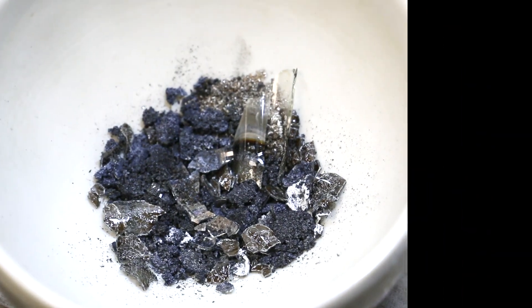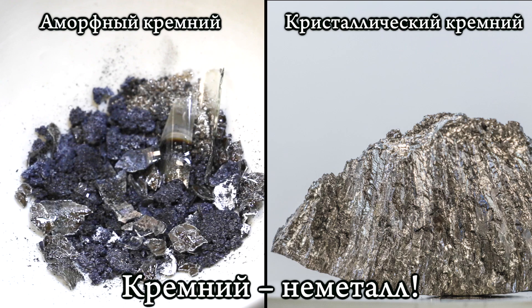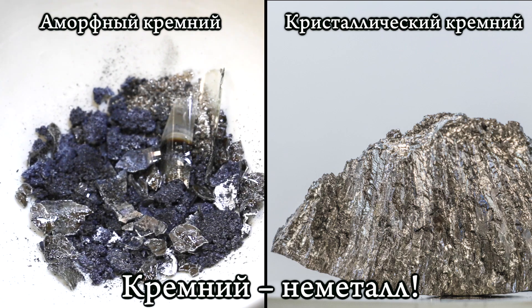В отличие от аморфного состояния, кристаллический кремний по внешнему виду напоминает металл – он серый и блестящий. Если задуматься, то без кремния мы с вами не смогли бы прожить: стёкла и цемент делают из веществ, в состав которых входит кремний. Монокристаллы кремния применяют в солнечных батареях и в микроэлектронике. То есть без кремния у нас не было бы компьютеров. Вы можете представить свою жизнь без техники?